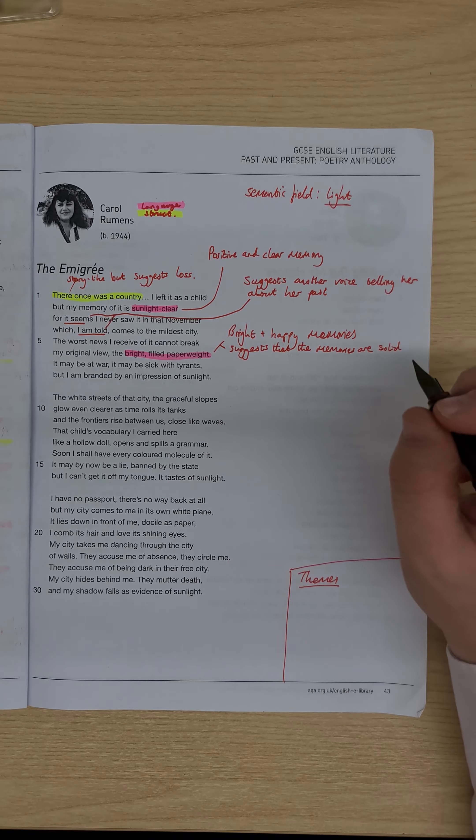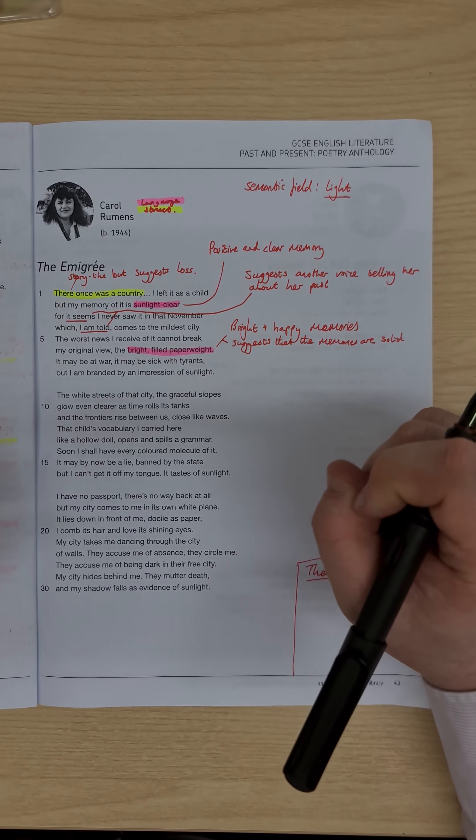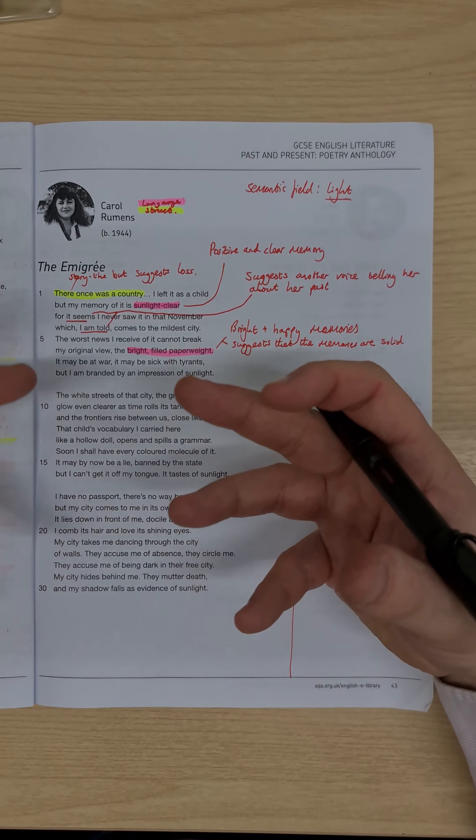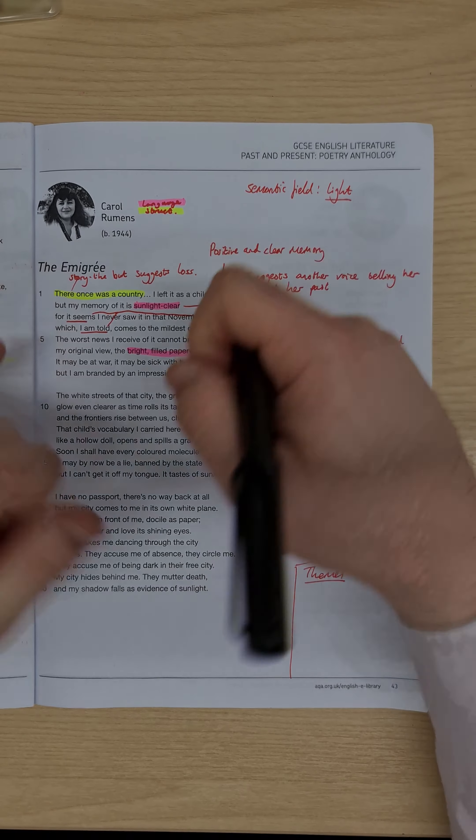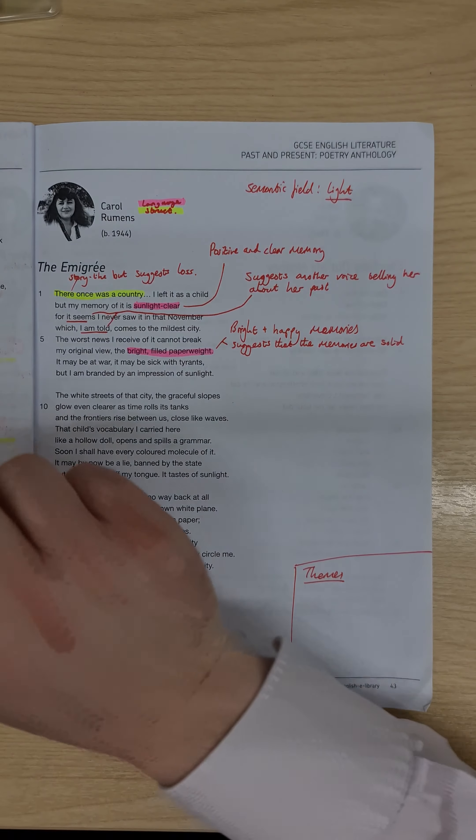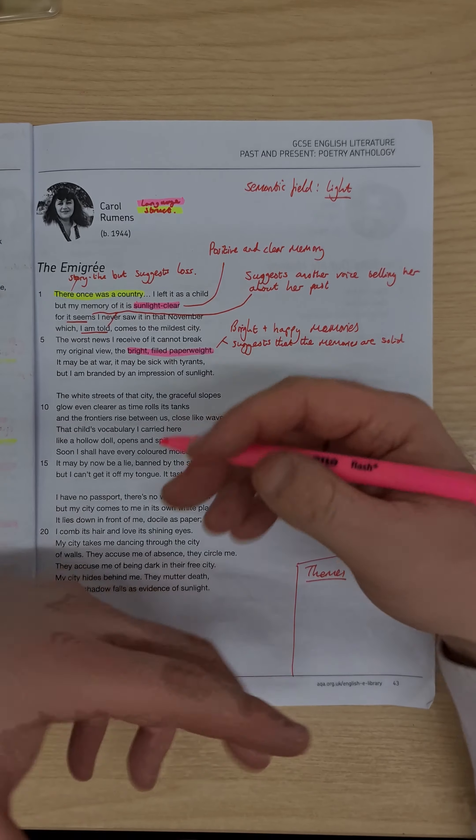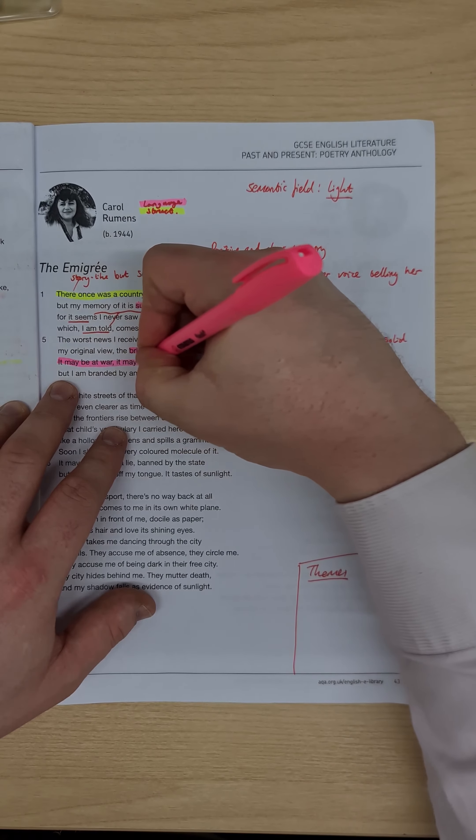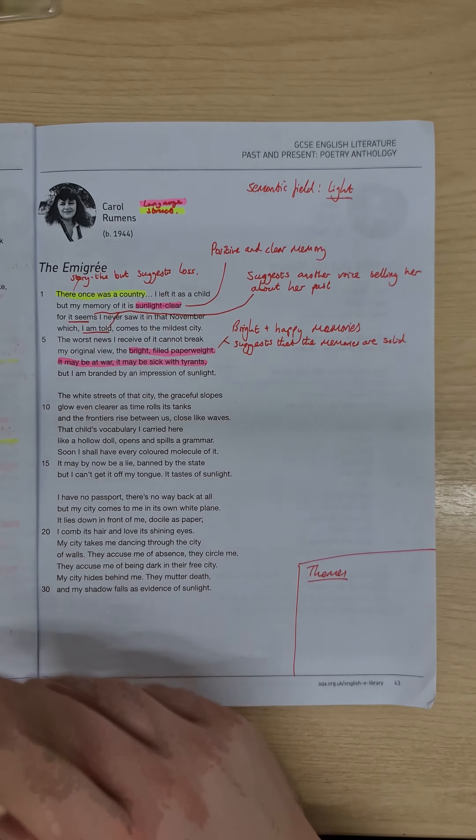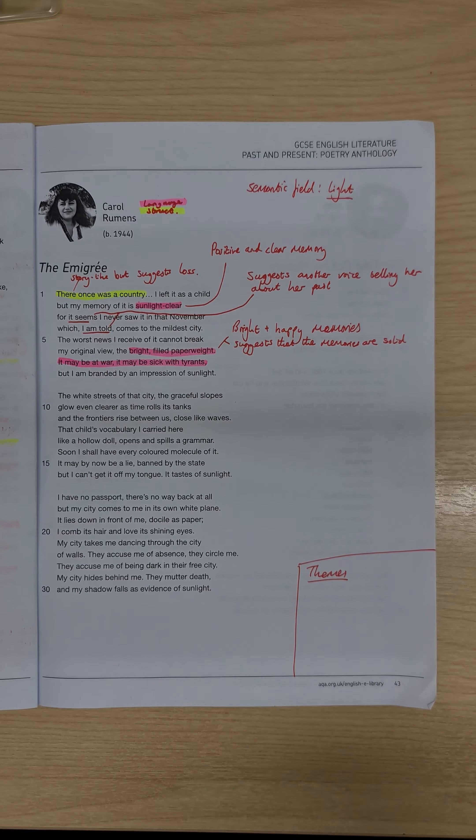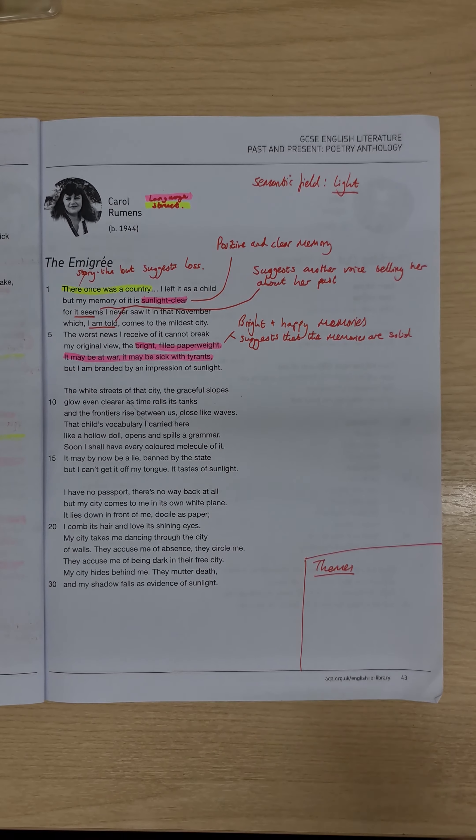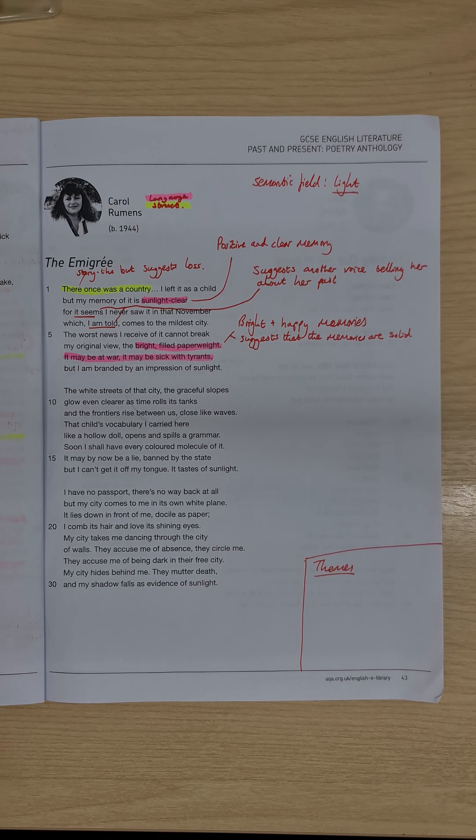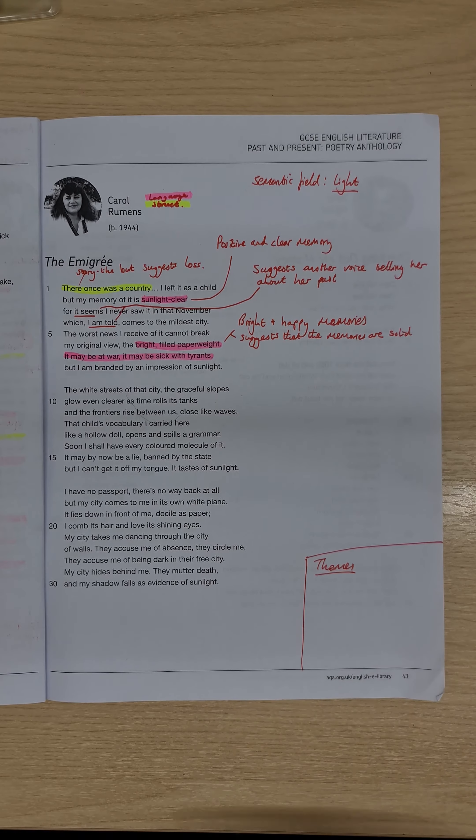It may be at war, it may be sick with tyrants, and now we get this contrast with this bright, positive imagery, and now we get this contrasting image and using the language of conflict, we're suddenly starting to get some of this war vocabulary, this conflict-based vocabulary, throughout. So using that imagery of conflict, we have this, the association with war and invasion that comes through in her memories.